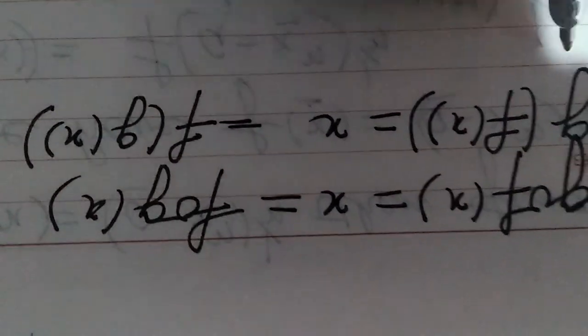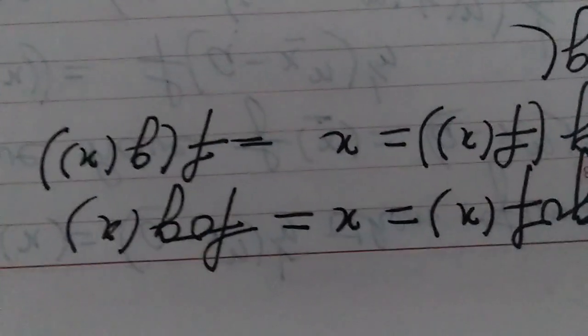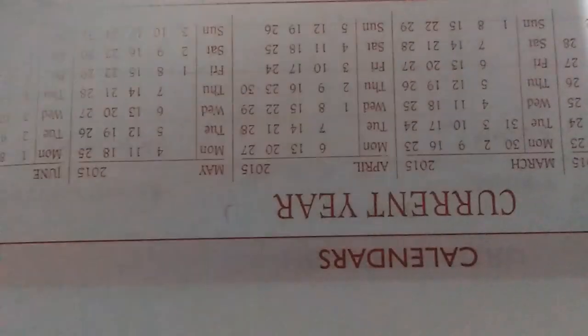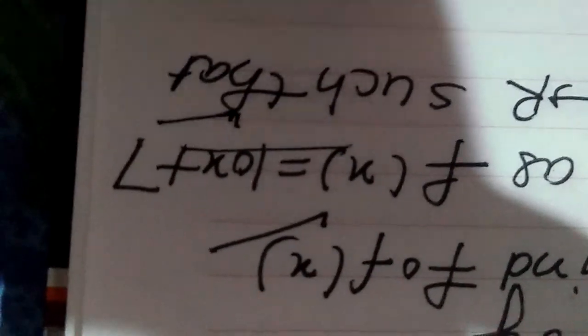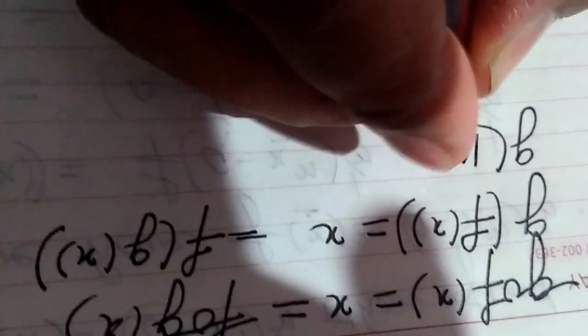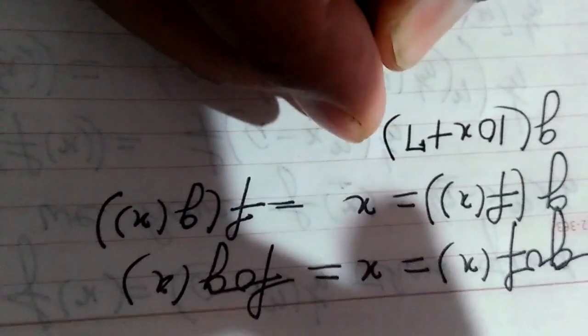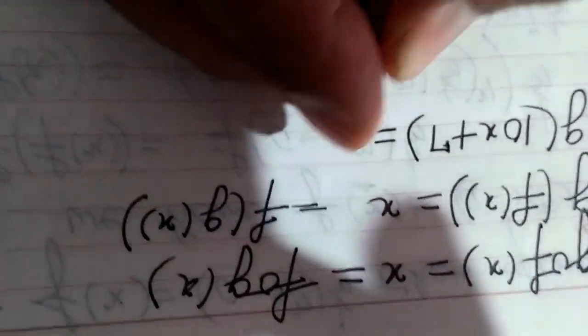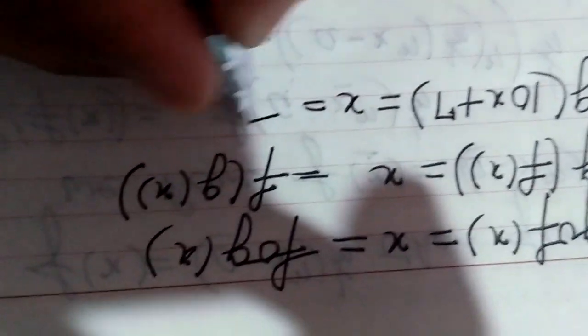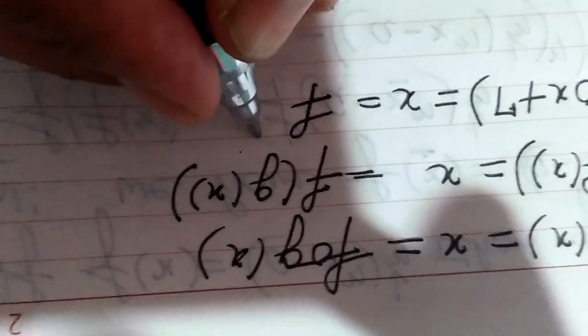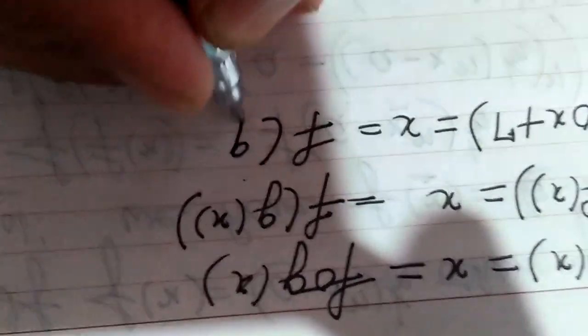We have the value of f(x). f(x) = 10x + 7. So we will fill it in. That gives us f(g(x)) = 10·g(x) + 7 = x. We need to find g(x).